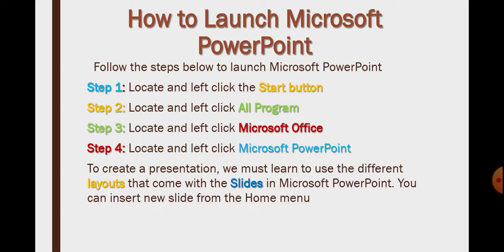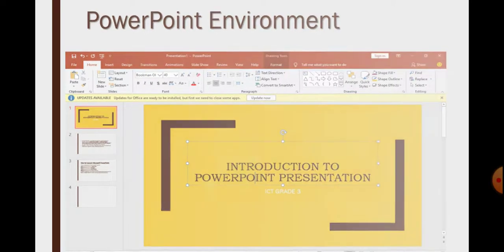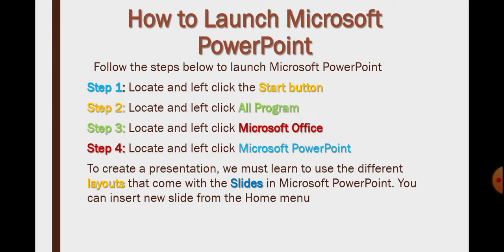To create a presentation, we must learn to use the different layouts that come with slides. In PowerPoint, there are different layouts. The first layout is called the title slide. The title slide has a place for your title and subtitle. Aside the title slide, there is title and content — you can use it to list items, like types of presentation applications: PowerPoint, Tab Slide, Google Slide, and so on. Another layout can be content and images. There are different layouts that we can use in Microsoft PowerPoint.